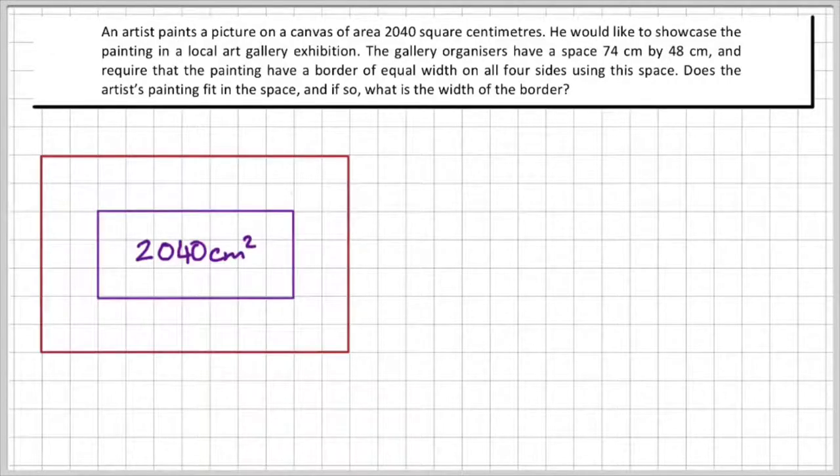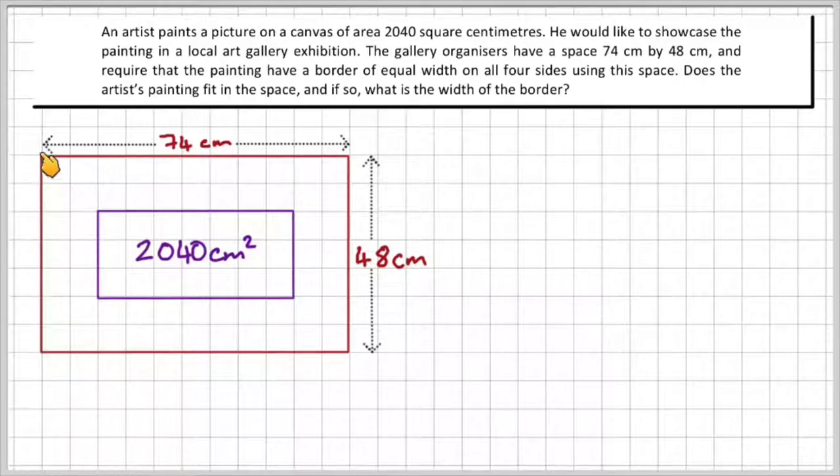So let's first draw this. Let's assume that this is the space that the art gallery have to offer, and this is the painting, the artist's painting. Now we know that the artist's painting has an area of 2,040 centimeters squared, and the area available to him is 74 centimeters by 48 centimeters.